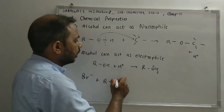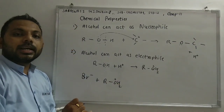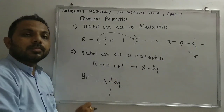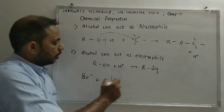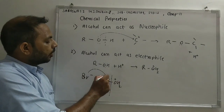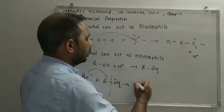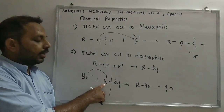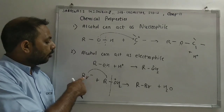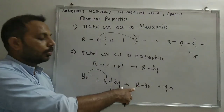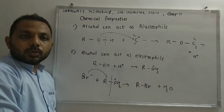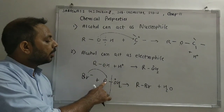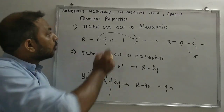In protonated alcohol, the bond between the alkyl group and oxygen is broken. Br⁻ attacks on the alkyl group, forming R–Br, and H₂O is released. So whenever protonated alcohol acts as an electrophile, the bond between carbon (alkyl group) and oxygen is broken.